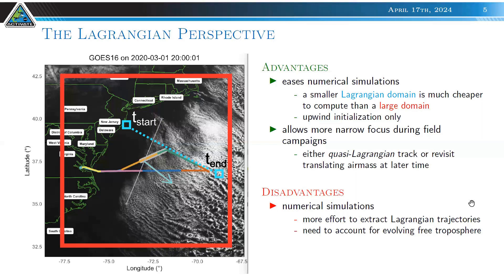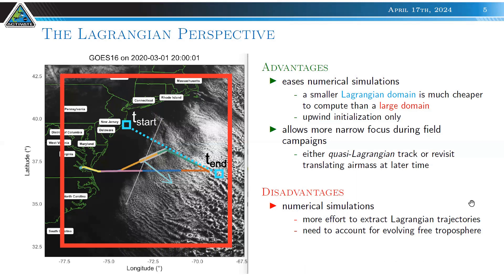The Lagrangian perspective also allows us to narrow the focus. For example, one flight portion was dedicated to probing in the downwind direction, allowing a quasi-Lagrangian track since the aircraft is much faster than the moving air mass. In another case, a second flight that day revisited an air mass probed earlier, but this is demanding and carries uncertain success since we don't know what the air mass will look like in five hours.